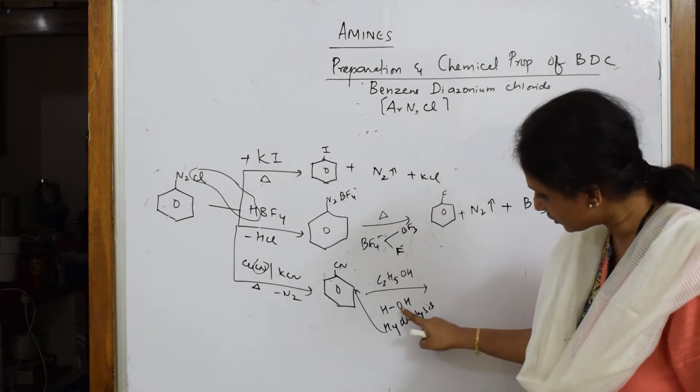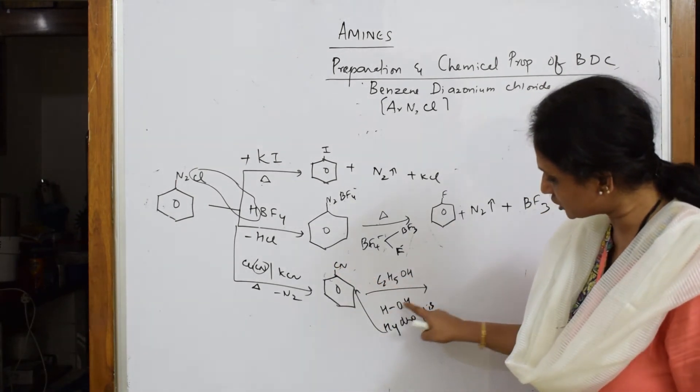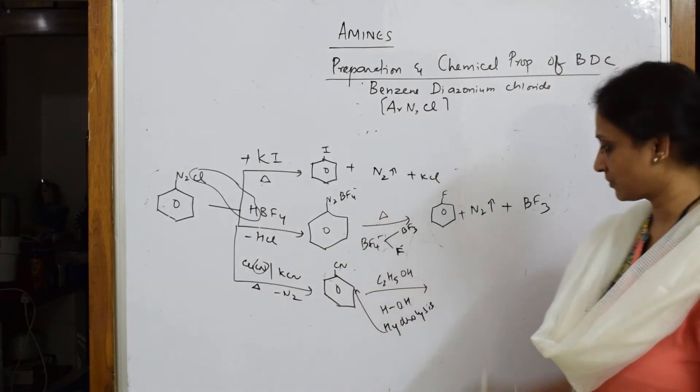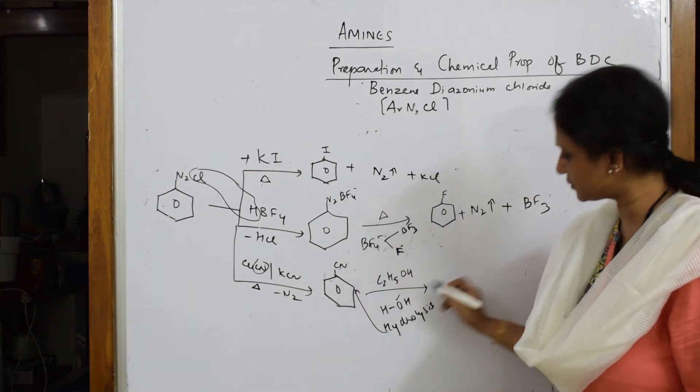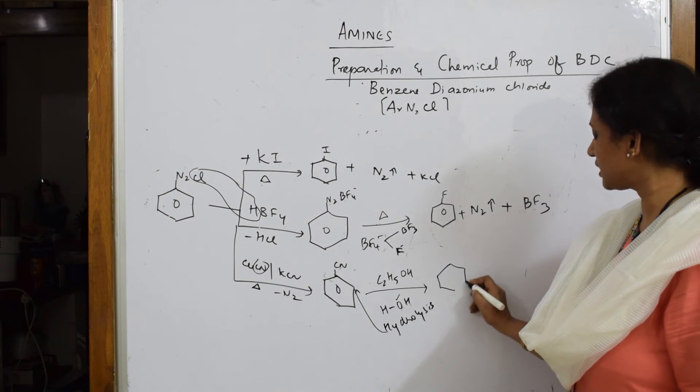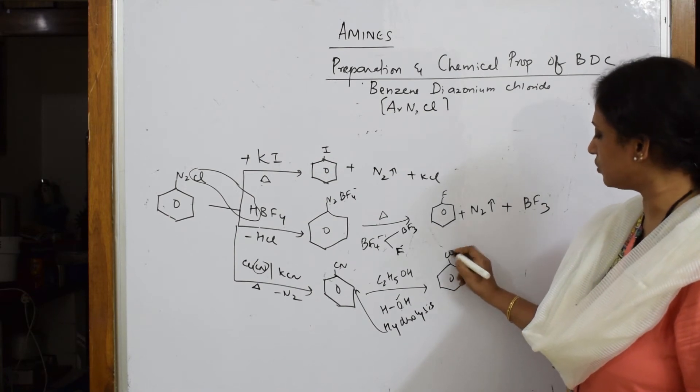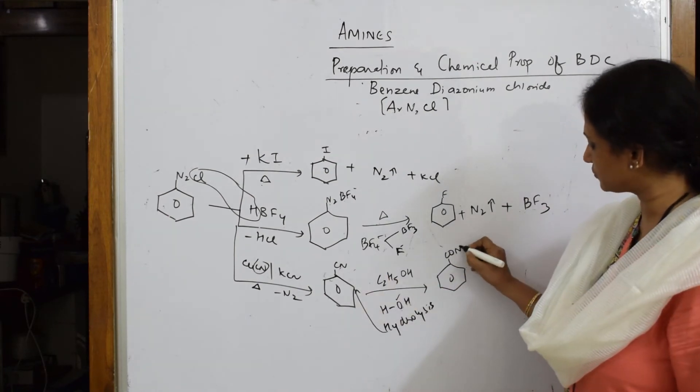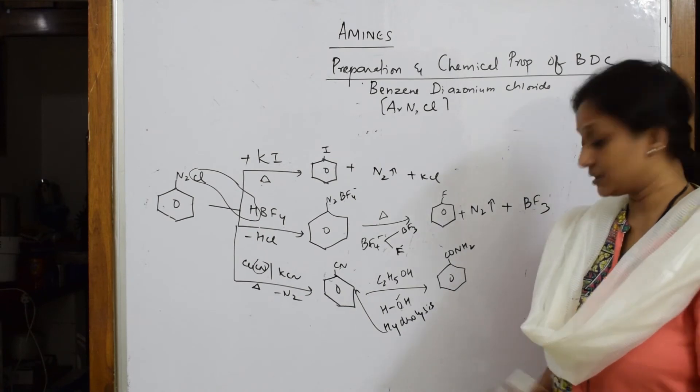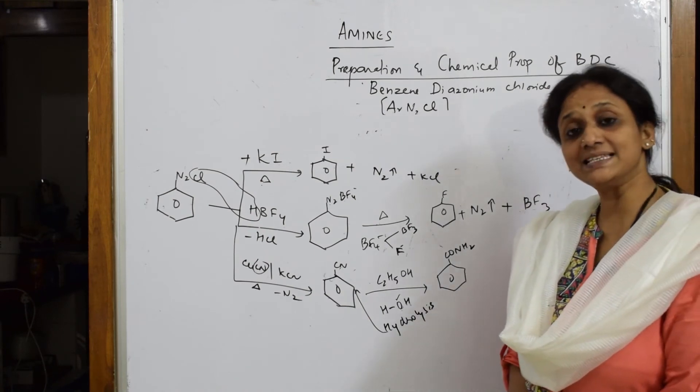Now this is your oxygen. This is your hydrogen, isn't it? To this cyanogroup, these two are going to attack. Your oxygen is going to attack carbon. Your H2 are going to attack with this. Oxygen first. Convert cyano into CO and H2 with your NH2. This is called amide now. Benzamide.